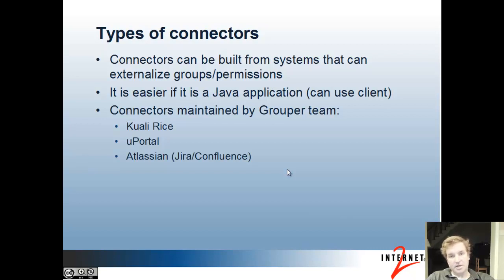The connectors maintained by the grouper team are the Quali-Rice connector, the U-Portal connector, and the Atlassian connector. Quali-Rice and Atlassian live in grouper subversion, and U-Portal lives with the U-Portal code.